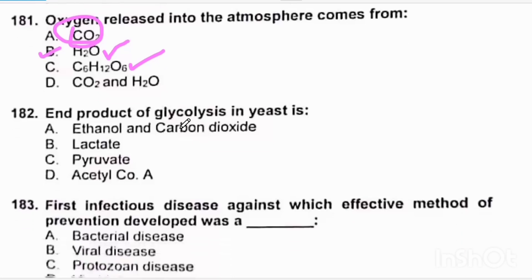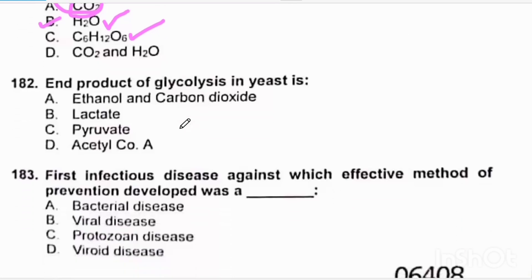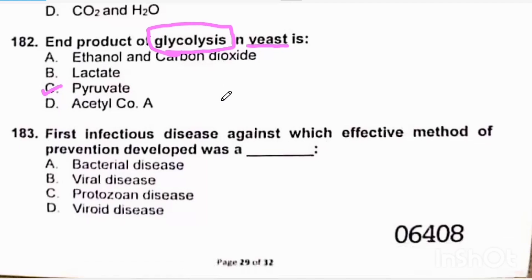End product of glycolysis in yeast. Irrespective of the cell, it does not matter in which type of cell is glycolysis. The end product is pyruvate. This is just to confuse students. Our keyword is glycolysis. Then further fermentation and anaerobic respiration will vary from aerobic respiration. Be vigilant about keywords.